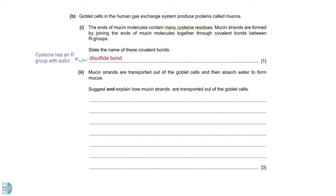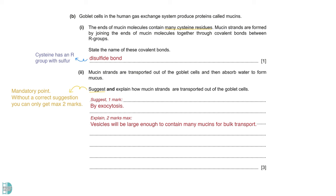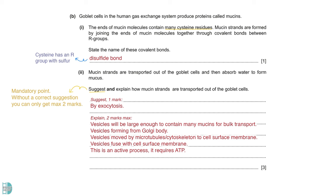Suggest and explain how mucin chains are transported out of the goblet cells. There is a mandatory mark for the suggestion. Exocytosis occurs when a large molecule is transported out of a cell in bulk. There are two marks for the explanations. Exocytosis is the method as the secretory vesicles will be large enough to contain many mucins for bulk transport. Those vesicles form from the Golgi body or Golgi apparatus. They are moved by microtubules or cytoskeleton in the cytoplasm to the cell surface membrane. The vesicles will then fuse with the cell surface membrane. This is an active process and it requires ATP. There is a mark for AVP. For example, you can provide the reason mucins cannot cross the phospholipid bilayer. An alternative answer is accepted for this question, which is facilitated diffusion.